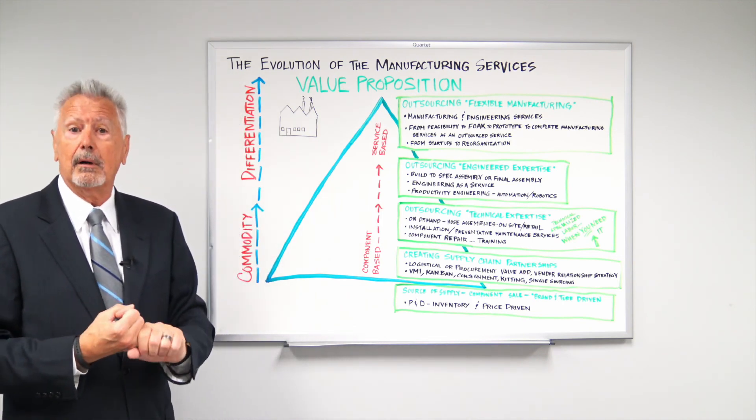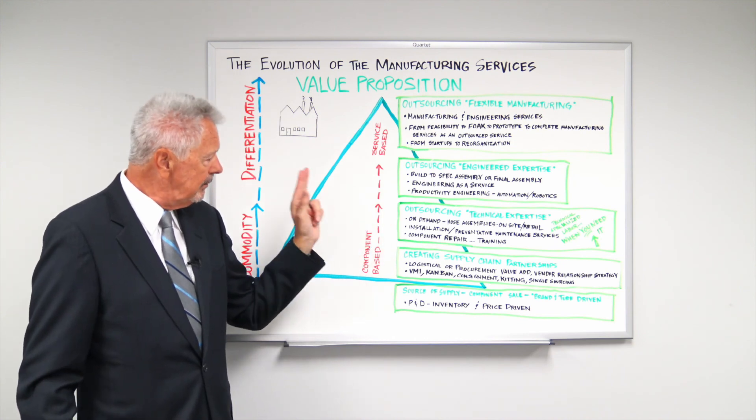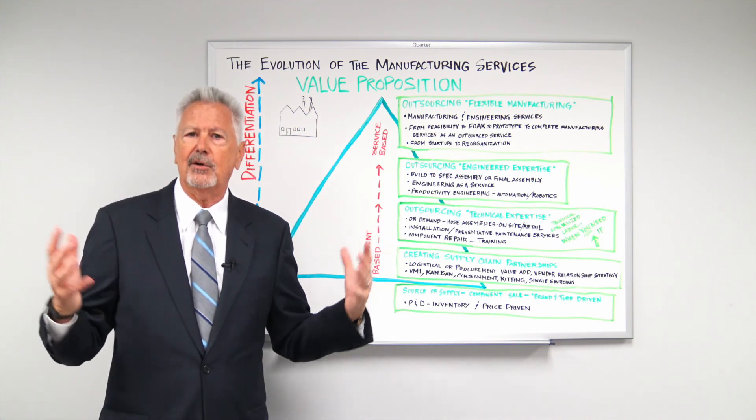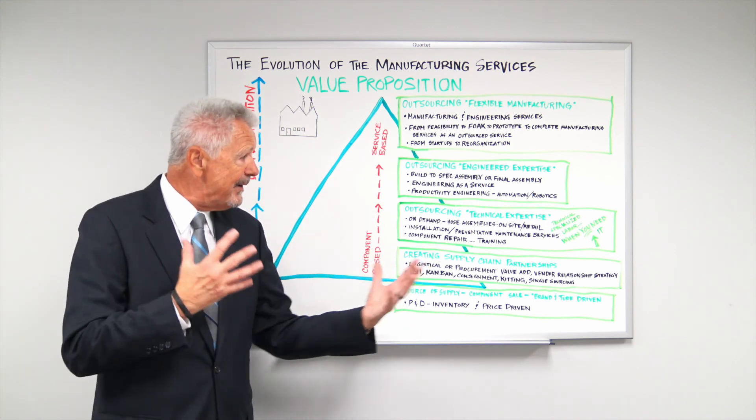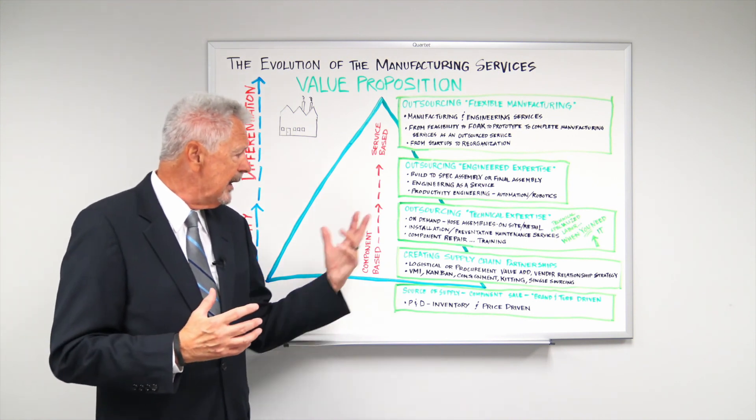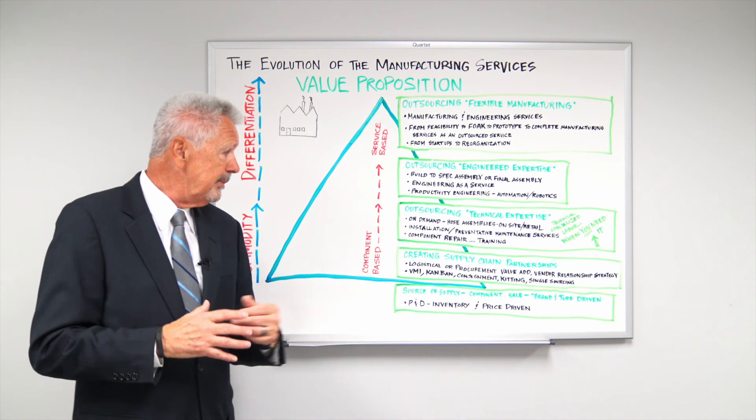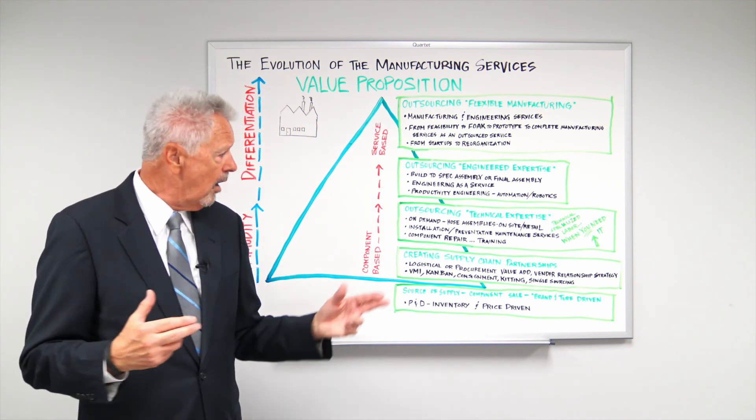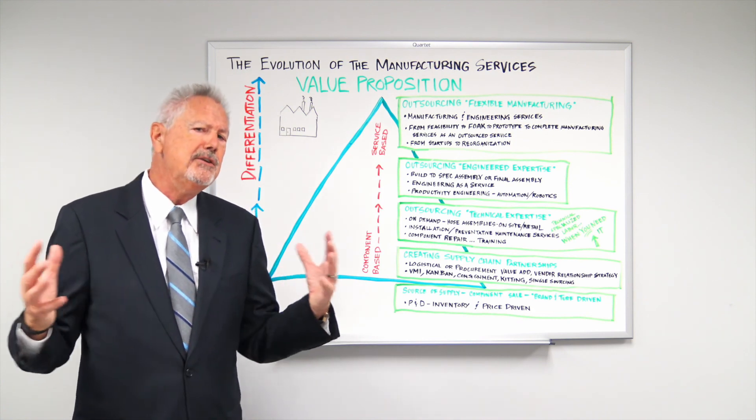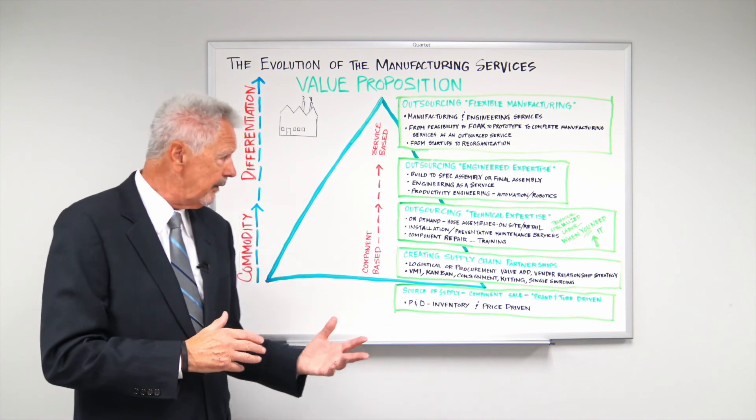It's what's so critical in our society right now. So what the smart and strategic suppliers are providing is on-demand technical expertise. And this is manifested in a wide variety of ways. It could be hose assembly manufactured. It could be installation or preventive maintenance. And clearly it could be component repair and training. All those are technical services on-demand when you need them. But only when you need them and only when someone is willing to pay for them.